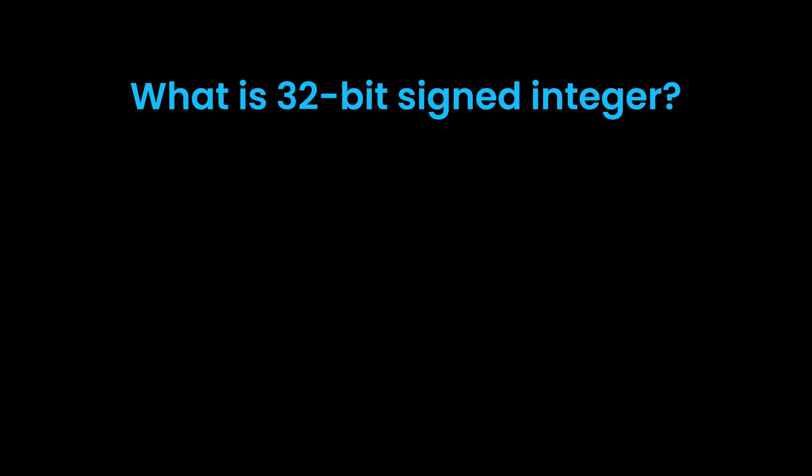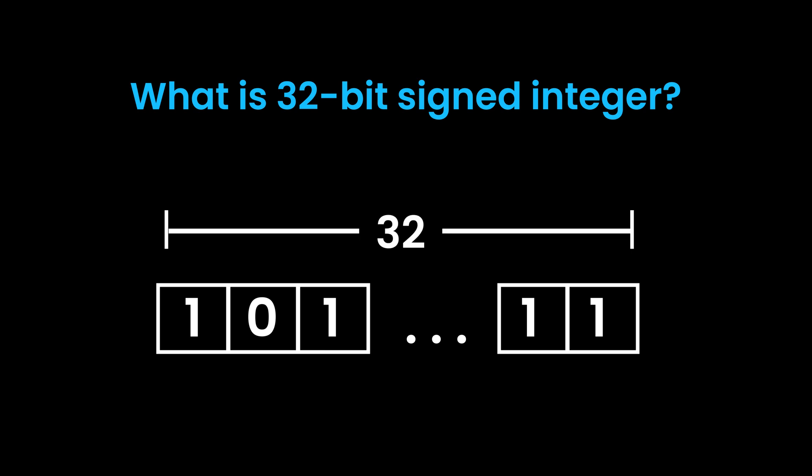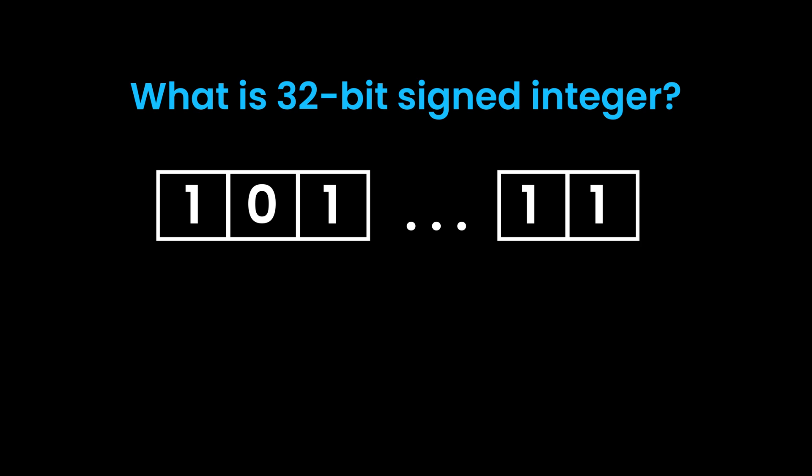Let's look at what the 32-bit signed integer means. Whenever you store a number as an integer, underneath it's stored as binary in your system. To store it as binary, it allocates 32 bits of space for each integer you define. Therefore, you cannot store numbers that would exceed this limit — otherwise you'll get an error. In the 32-bit range, the first bit is allocated for the sign, because otherwise you would only be storing positive numbers.